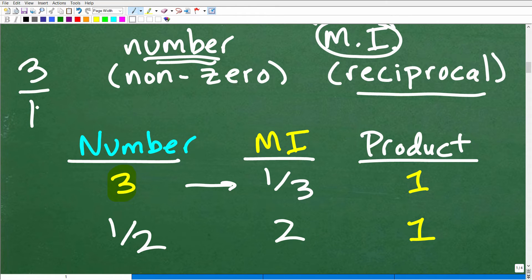So 3 over 1 is the same thing as 3, and when you flip this upside down, it's going to be 1 over 3. This is the reciprocal of 3 or 3 over 1. This is our number. This is our multiplicative inverse, and we know that because when we multiply these together, the product is equal to 1.